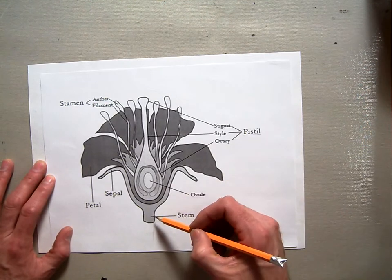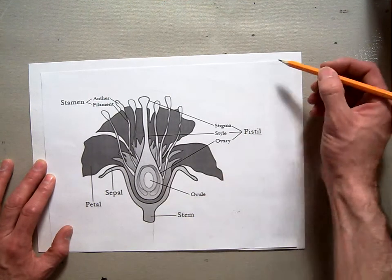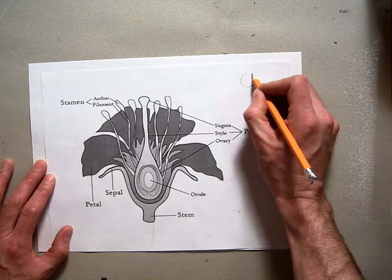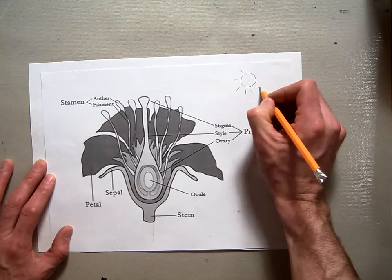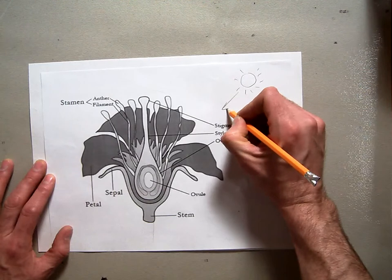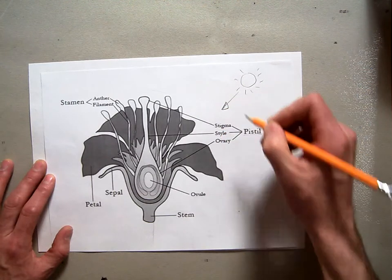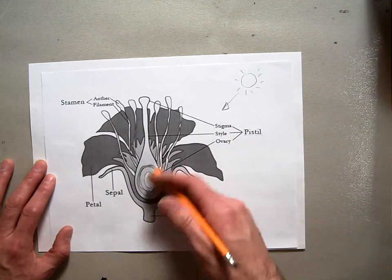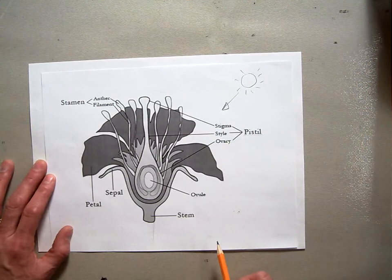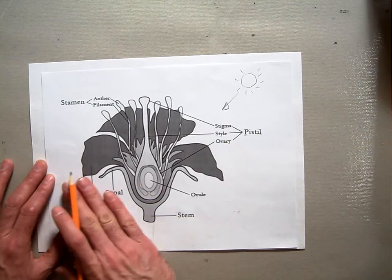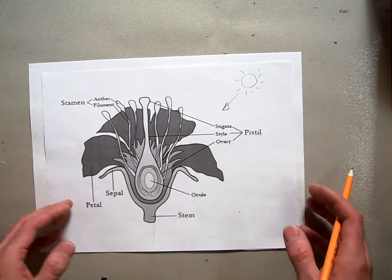And of course, all of that works because of photosynthesis, which is where the sun is creating the energy and the sun rays come down towards the plant and the plant changes the sun rays into energy and can grow the flower. So this is the basic layout for pretty much all flowers.